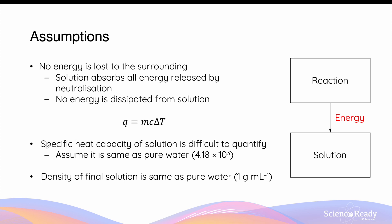The second assumption is that the specific heat capacity of the solution is often difficult to quantify. So for most calculation questions and experiments, we assume the heat capacity of the solution is the same as pure water, which is 4.18 × 10³ J per kilogram per kelvin. This is not always a bad assumption, because the concentration of solutes in the final solution may be so dilute that it is effectively the same as pure water.